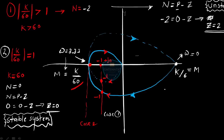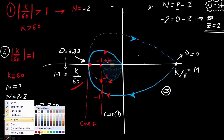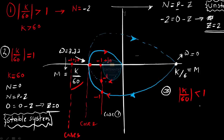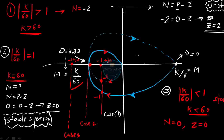Case 3: the −1+j0 point is outside the plot, meaning k/60 < 1, so k < 60. In this case there is no encirclement, N = 0. Using N = P − Z: Z = 0. The system is stable when k < 60.